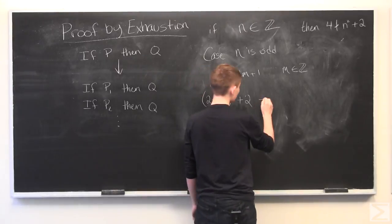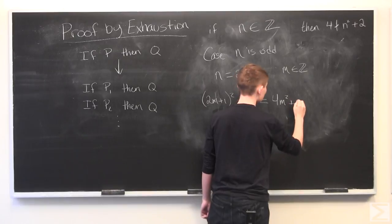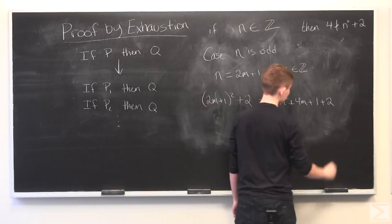We can FOIL this out, and we'll get 4M squared plus 4M plus 1 plus 2.